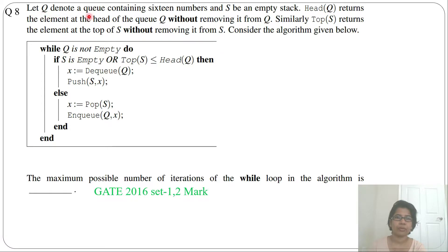Let Q denote a queue containing 16 numbers and S be an empty stack. Head(Q) returns the element at the head of the queue Q without removing it from Q, while Top(S) returns the element at the top of S without removing it from S. Consider the algorithm given below.